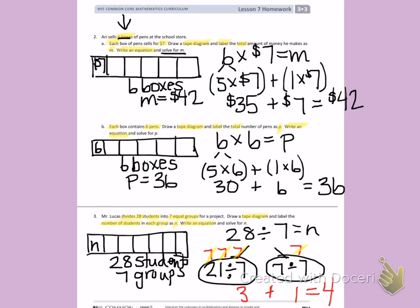Coming back to my tape diagram, I can label N equals 4.